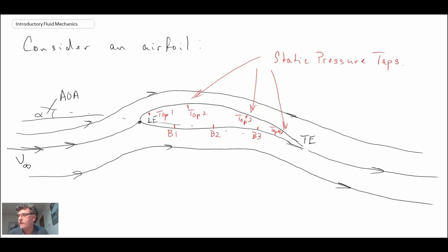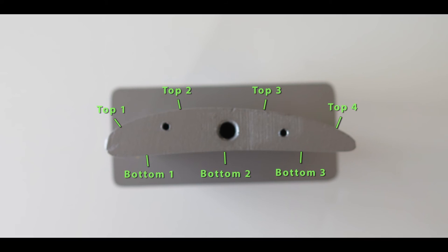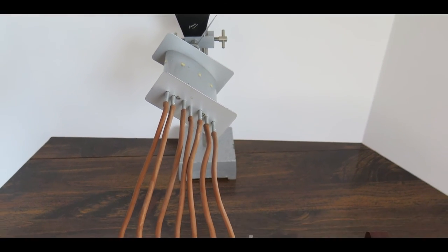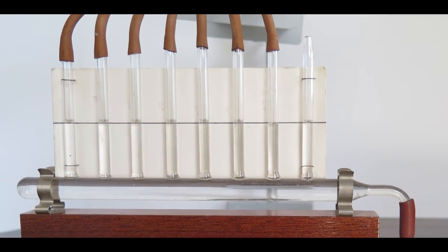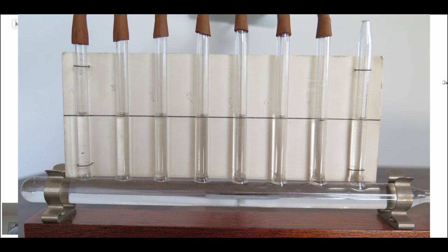We're going to take a look at a video of an airfoil placed in a flow and see what happens with the pressure. Here is a picture from the end of the airfoil showing the location of the pressure taps — four on the top, three on the bottom. Those pressure taps are connected to tubes which go to a water manometer, where we can measure the pressure at a number of different sections.